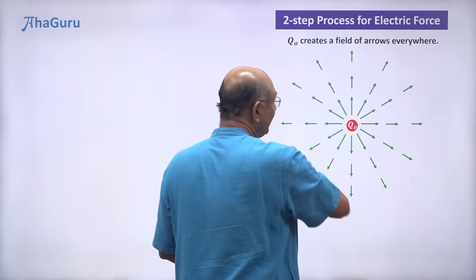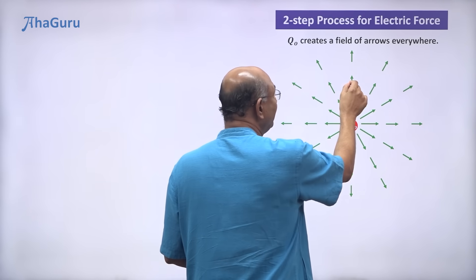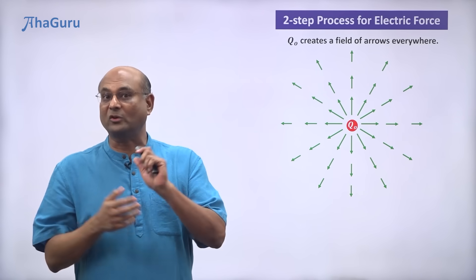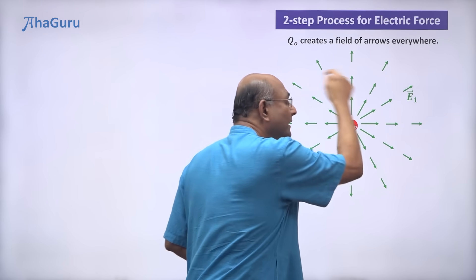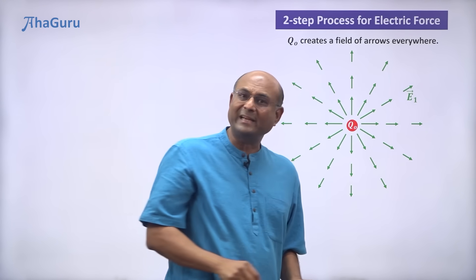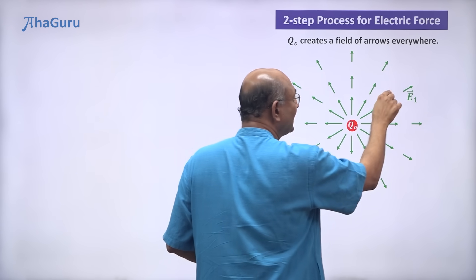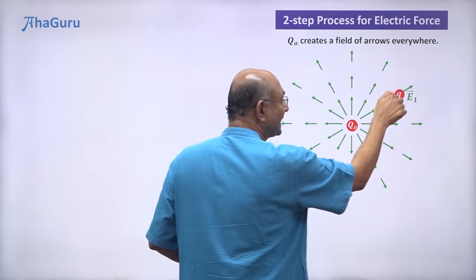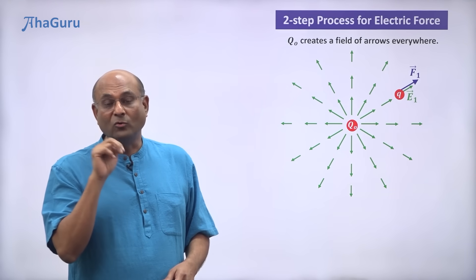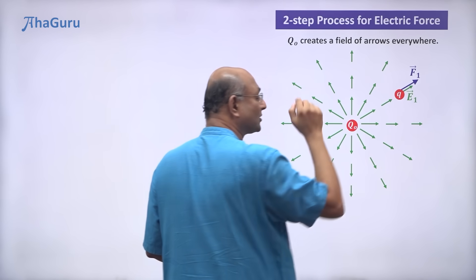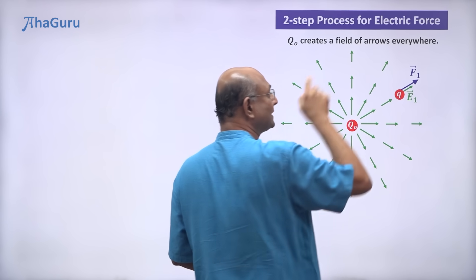So Q naught is putting electric field vectors all over space. If I brought a charge and kept it anywhere, this arrow is going to exert a force on it. Let us take this particular arrow — it is a vector, so we can talk about it mathematically. We can say it is E1 vector; maybe it is 3i cap plus 4j cap plus 5k cap — we can write this as a vector. Now, if I brought a charge at that location, then this electric field vector E1 is going to exert a force on Q. Notice, I am no longer saying Q naught is exerting a force on Q — I am saying Q naught is creating E1 and E1 is exerting force F1 on Q.